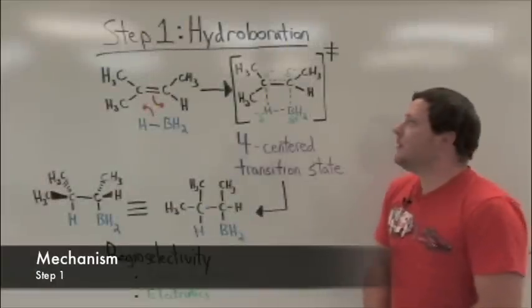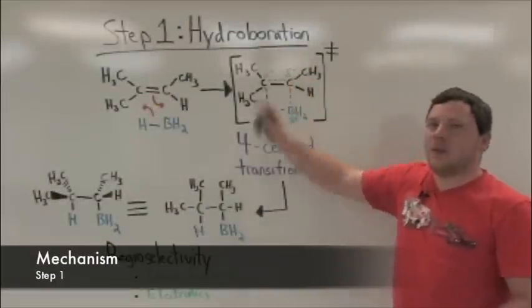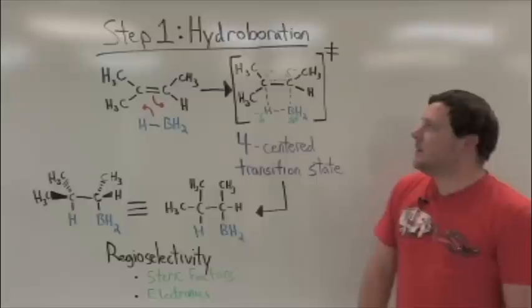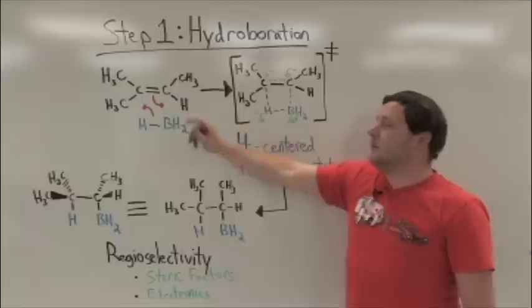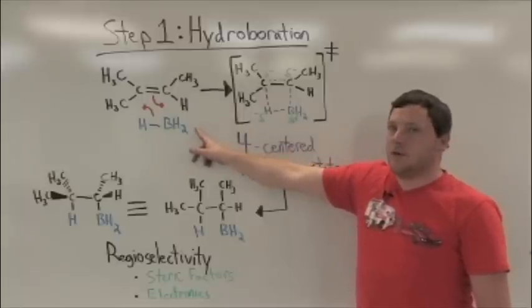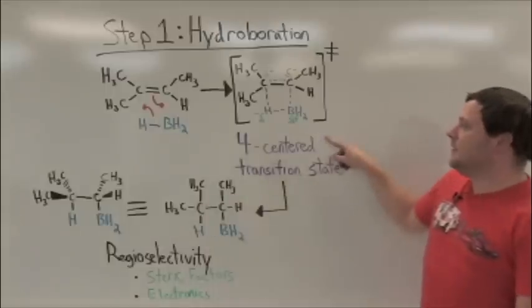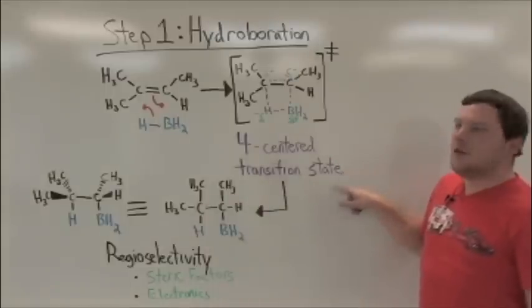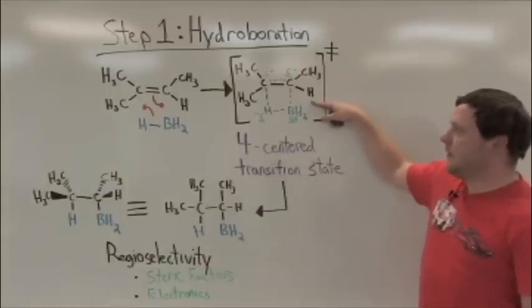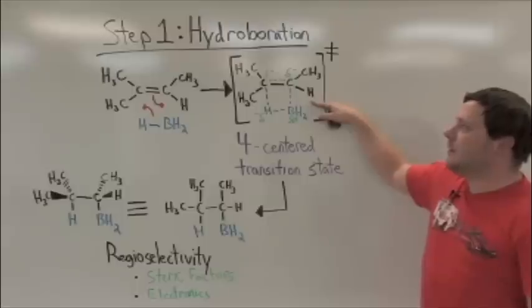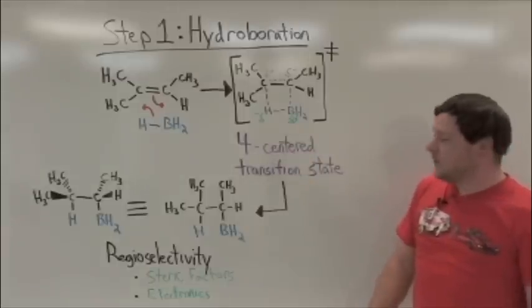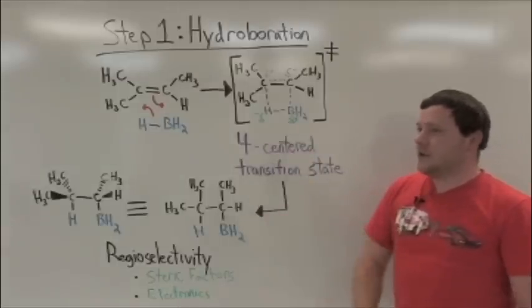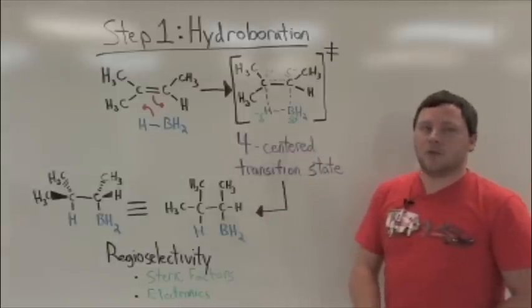To begin with, let's look at hydroboration. The first step of this process begins with the formation of a pi complex through the Lewis basic alkene and the Lewis acidic borane. This pi complex may lead to a four-centered transition state which looks like this. Upon completion of this concerted bond making and bond breaking process, we have the formation of our hydroboration product.